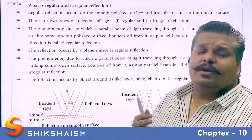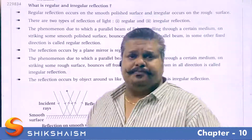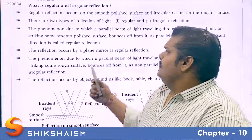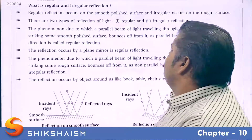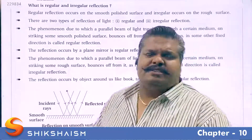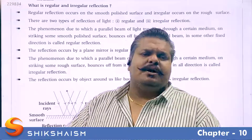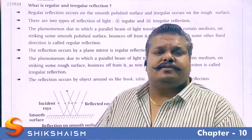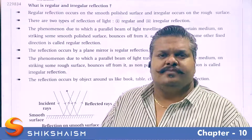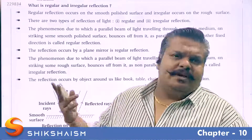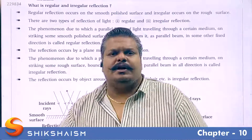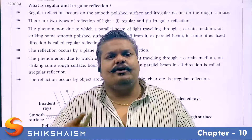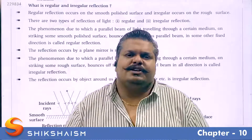Regular reflection occurs on a smooth and polished surface, while irregular reflection occurs on a rough surface. There are two types of reflection: regular and irregular reflection. Now, what is the meaning of regular reflection?